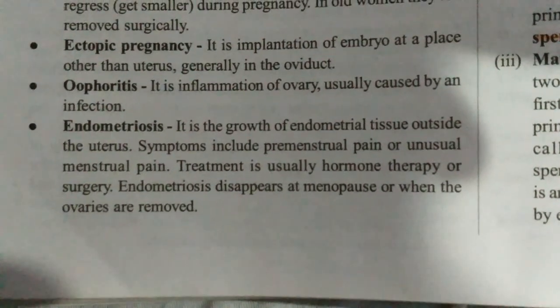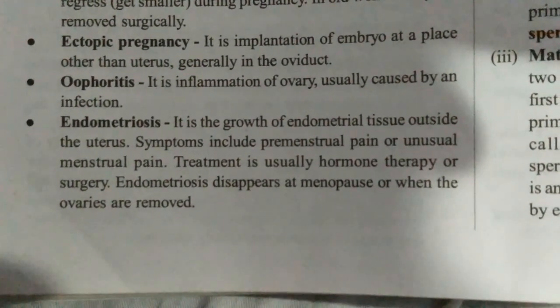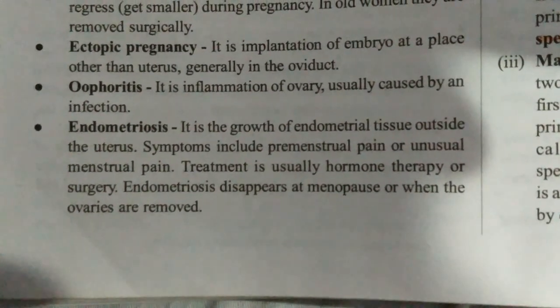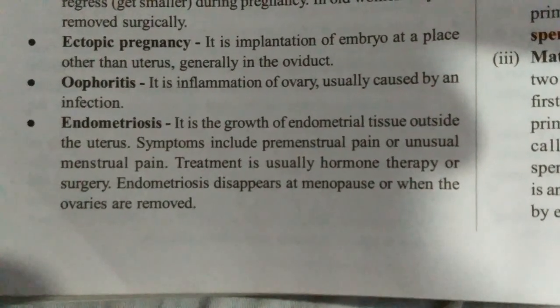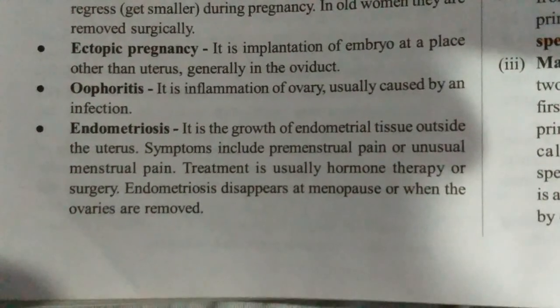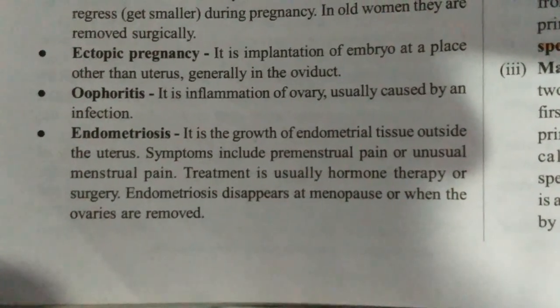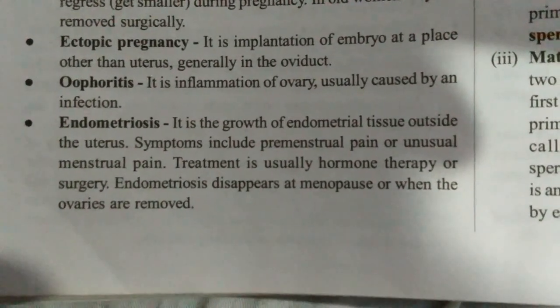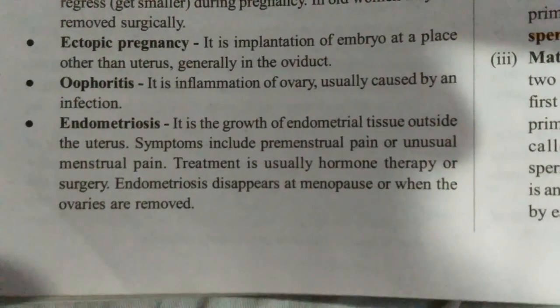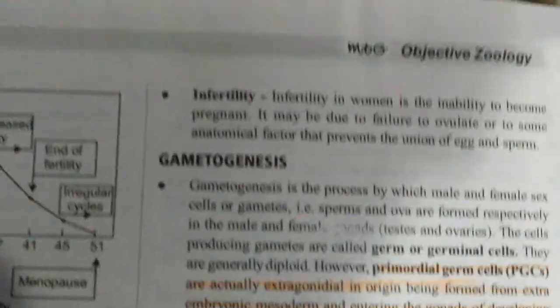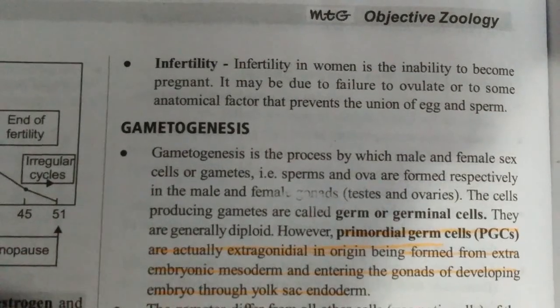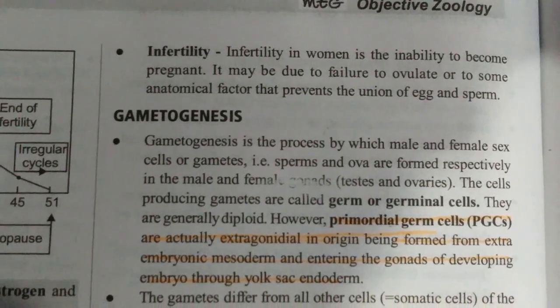The symptoms of endometriosis include premenstrual pain — that is, pain that starts before menstruation — or unusual menstrual pain. It is treated by hormone therapy or surgery. It disappears at menopause or when the ovaries are removed. Then there is infertility, which is the inability of a female to become pregnant.